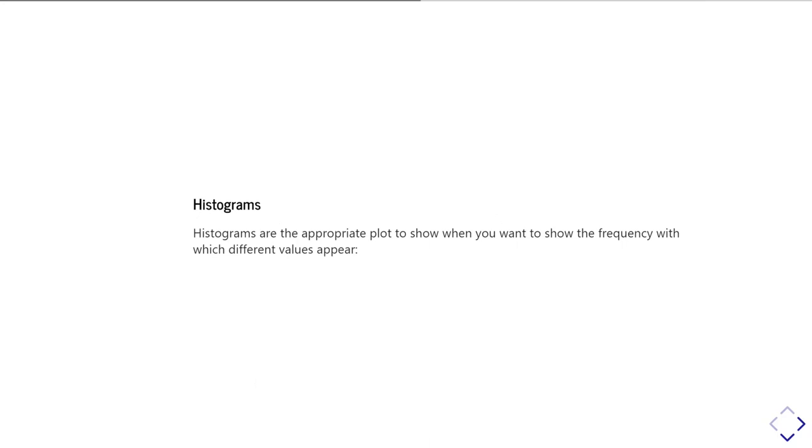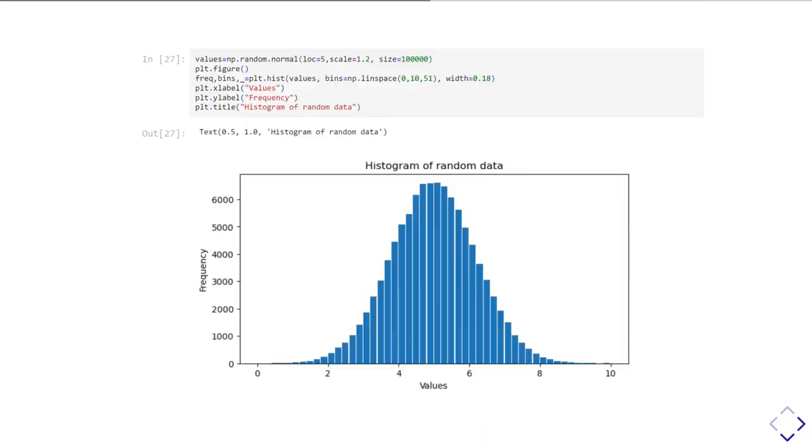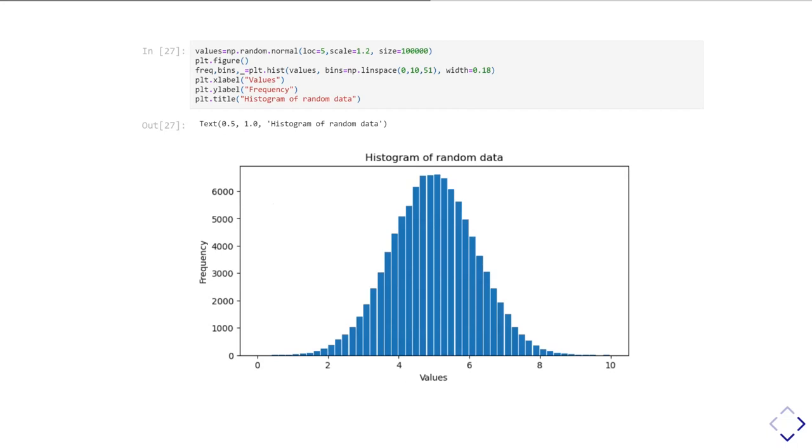For example, you might need to do a histogram. A histogram is an appropriate plot to use when you want to show how frequently some sort of values appear in your data. Here I've created a set of random numbers based on a normal distribution. In fact, I've created a lot of random numbers there. Then I've used the plot.hist function in order to make a histogram of the data. plot.hist will take in the values I want to make a histogram of. I can optionally specify how the bins should be. In this case, I've actually told it how I want the bins to be.